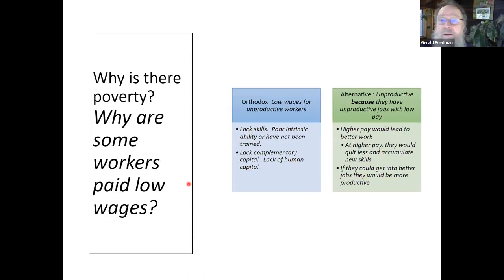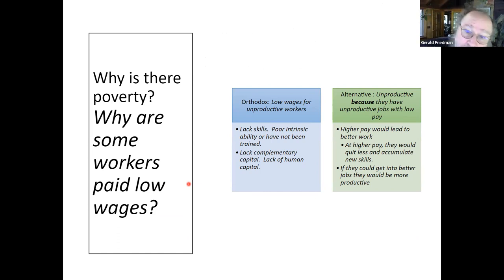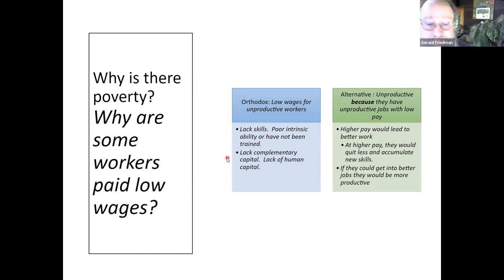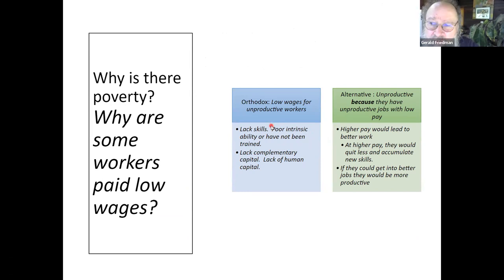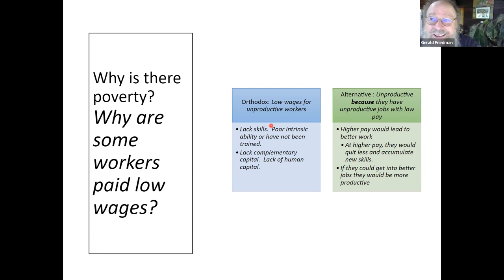Why is there poverty? In this approach it's because workers are unproductive — they lack skills, they lack complementary capital. So what do you do? If you're a liberal you say let's give them more education, let's spend more on education, maybe provide job training, give companies credits for training workers. American companies spend relatively little on training workers compared to German or Japanese companies. The Germans and Japanese expect to keep workers for a long time, so they train them.